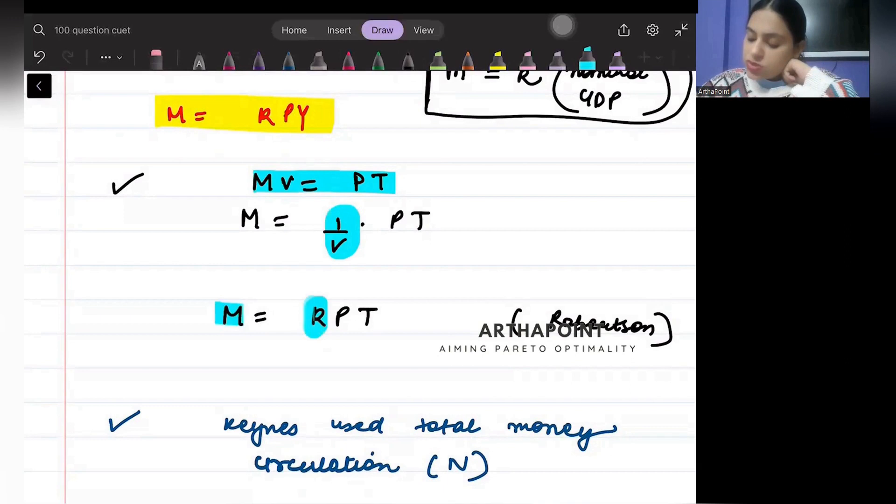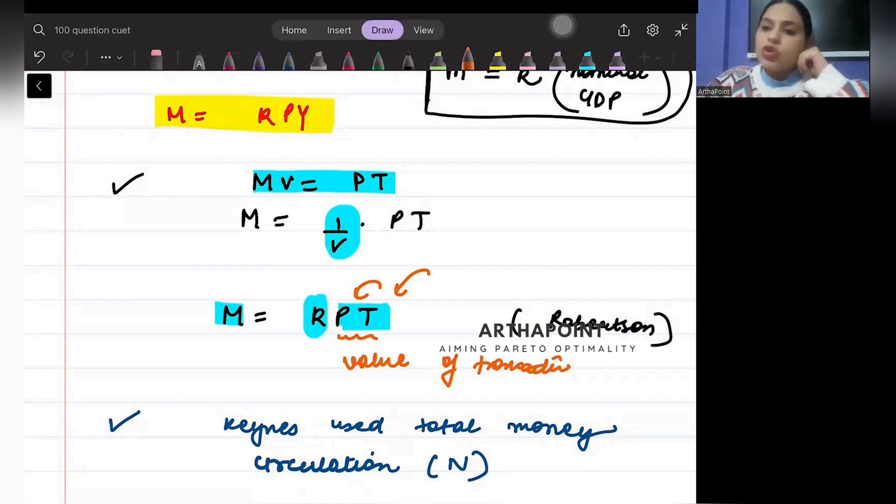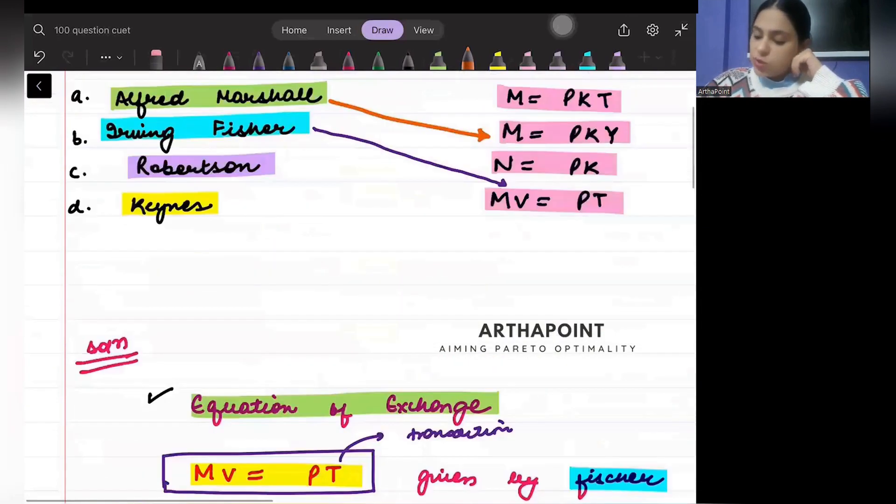So he said money is equal to some proportion of the value of the transactions. PT - P is the price of the transaction, T is the number of transactions, so this is the value of transaction. M is some proportion of the value of the transaction - that is what Robertson gave.